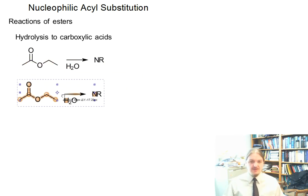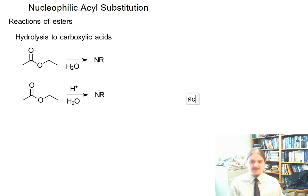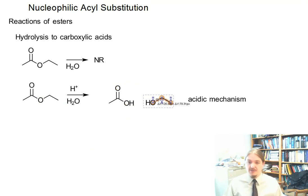But if you were to add an acid to the reaction, you would get nucleophilic substitution, nucleophilic acyl substitution by the acidic mechanism. And this of course refers back to my video on the mechanisms of these reactions. And you would get carboxylic acid out of this mechanism and you would get the alcohol.